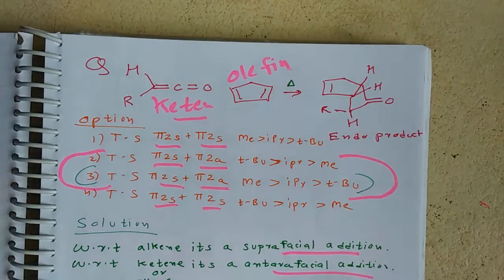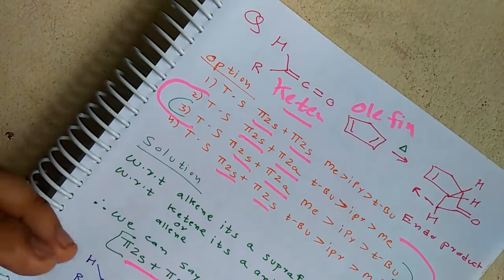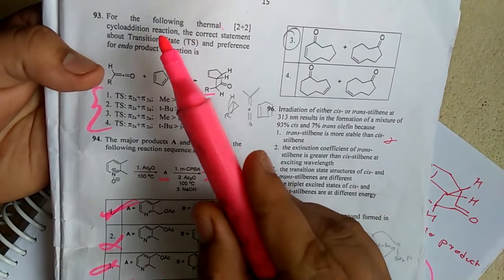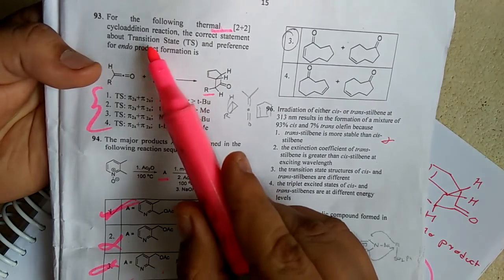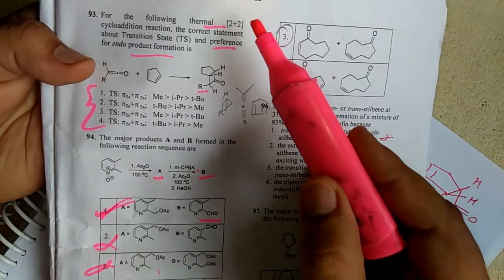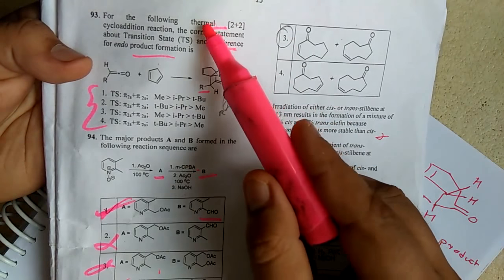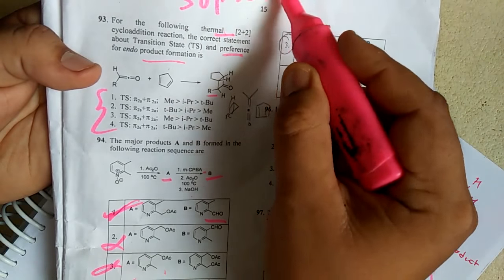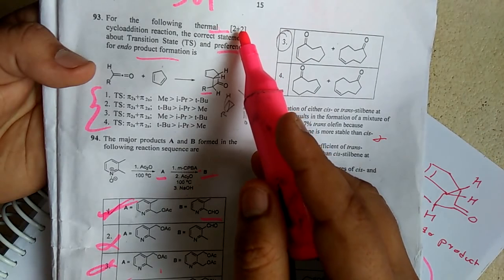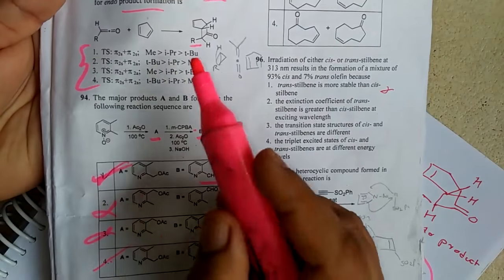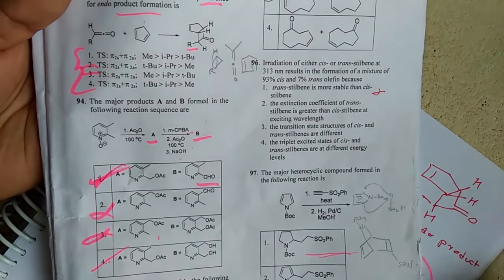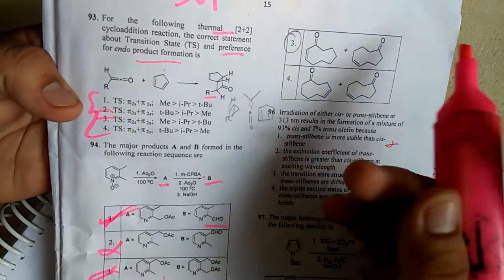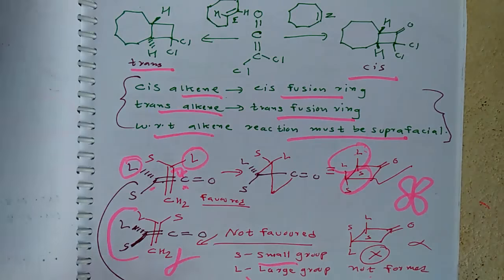Now we discuss the Diels-Alder type question. They ask about a thermal 2+2 cycloaddition, the correct statement about the transition state, and the preference for endo product formation. For photochemical 2+2, the reaction follows suprafacial-suprafacial addition. From this, we are left with two options: second and third. Thermal 2+2 takes place in ketene and allene systems. Let's discuss some basics about this reaction before answering.